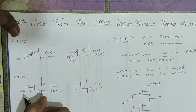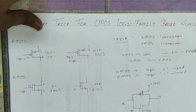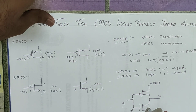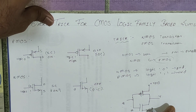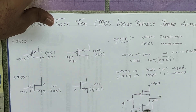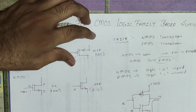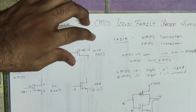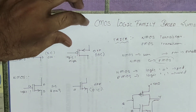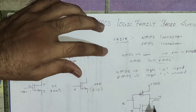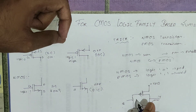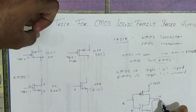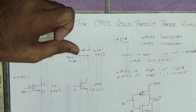If A is at logic 1, the NMOS gets short circuited and ground is connected to the output, so output will be 0. If input is 0, NMOS will be off, and since PMOS is ON for logic 0, PMOS will be short circuited and VDD gets connected to output, giving output as 1. So this circuit acts as a NOT gate.